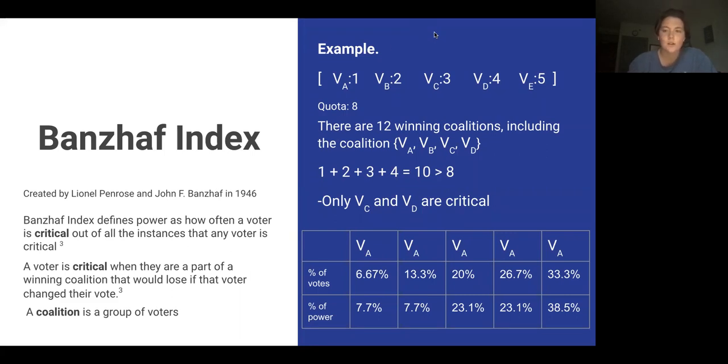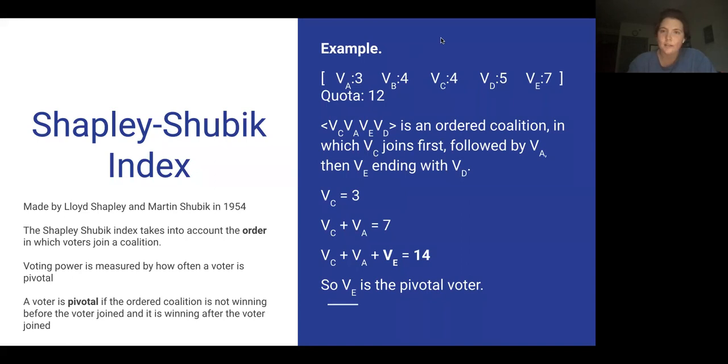The second index we used is called the Shapley-Shubik Index, made by Lloyd Shapley and Martin Shubik about 10 years later. They did this because they didn't think the Banzhaf Index was comprehensive enough. The way this one is different is that the Shapley-Shubik Index takes into account the order in which voters join a coalition. Where the Banzhaf measured how often a voter was critical, the key word here is pivotal. It's asking how often a voter is pivotal, or in the order that they join the coalition, how often are they the one that turned the coalition from losing to winning?